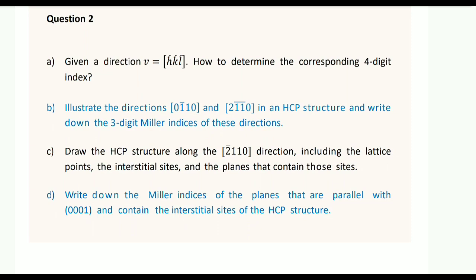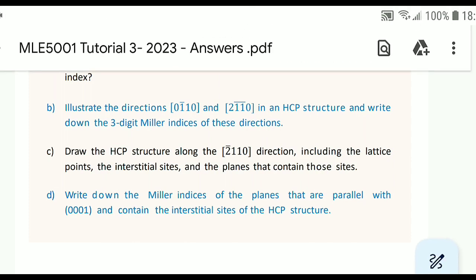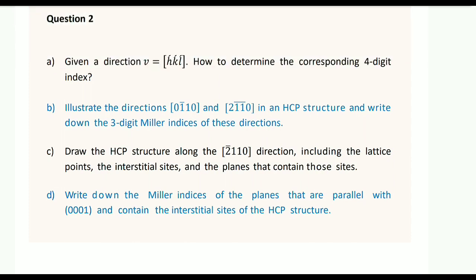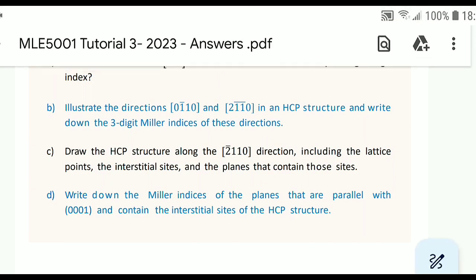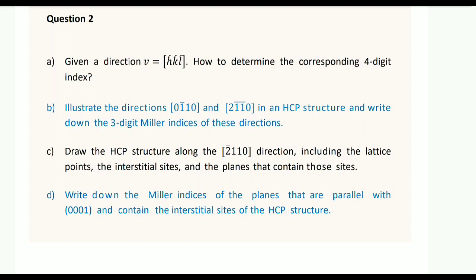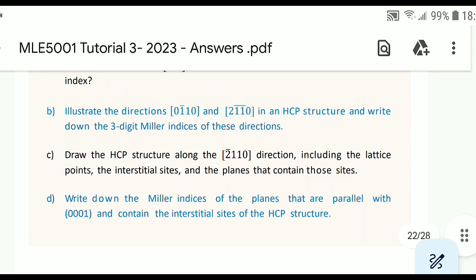We need to draw these two directions in the HCP structure. The directions are given in four-digit Miller indices, also called Miller-Bravais indices. We need to draw these directions in an HCP structure and then convert them from four-digit Miller indices to three-digit Miller indices. The transformation formula was already derived in part A — I'll just mention it directly in this solution. If you are interested in the derivation, you can check out part A.